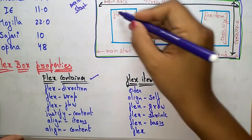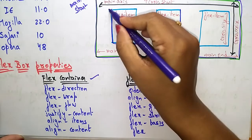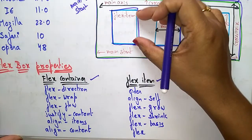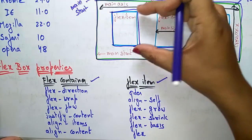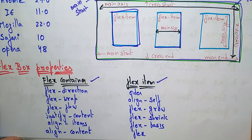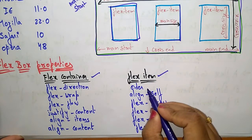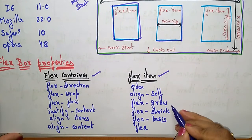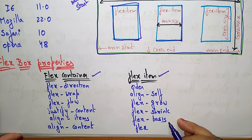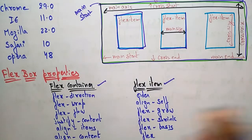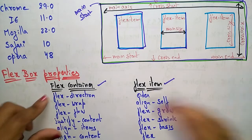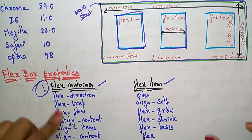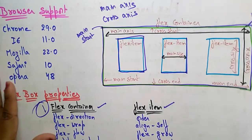Now let's see the flex item properties. For each flex item, you need to write certain properties so that your item appears in the format you want. The flex item properties are: order, align-self, flex-grow, flex-shrink, flex-basis, and flex.